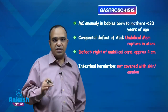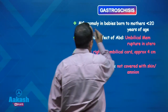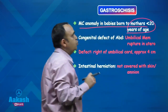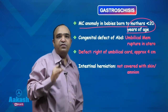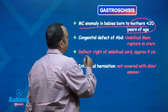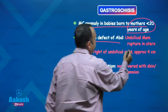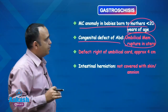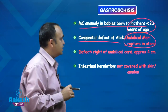First is gastroschisis. Gastroschisis is the most common anomaly in babies born to mothers less than 20 years of age — that means young mothers. Babies are prone to develop this congenital anomaly. The defect is due to the in utero rupture of the umbilical membrane; that is the reason why gastroschisis develops.